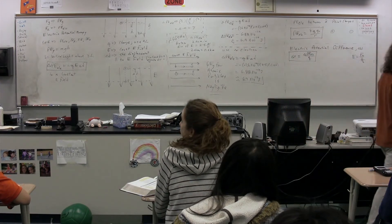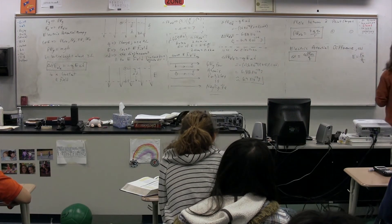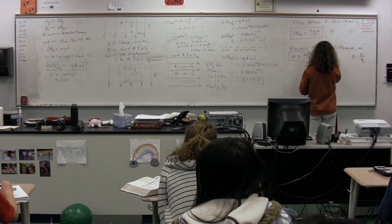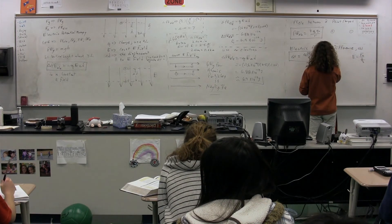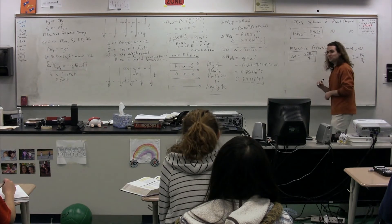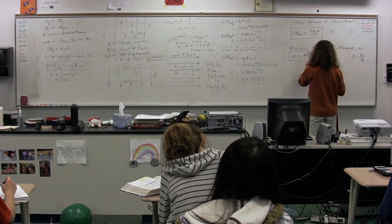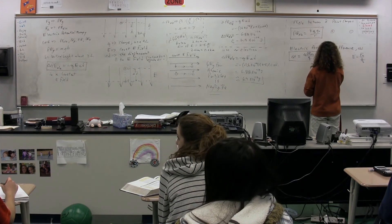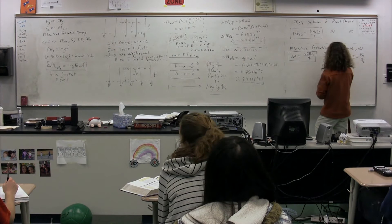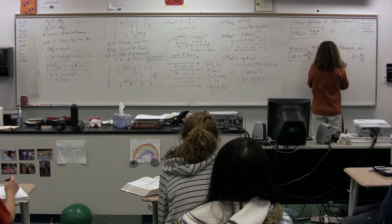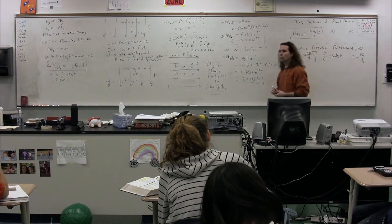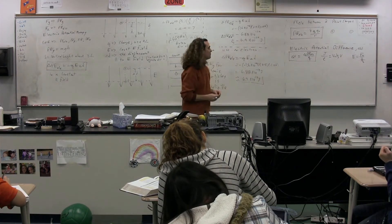Let's start with the dimensions. Dimensions on electric potential energy: joules. Divided by charge: coulombs. Which is equal to — it's called a volt. So joules per coulomb, by definition, is a volt.